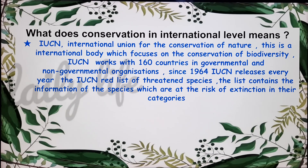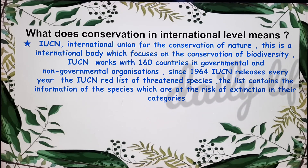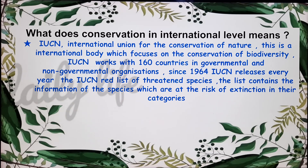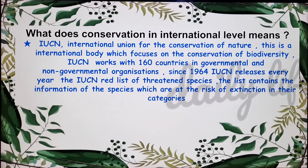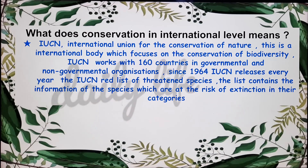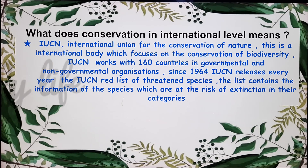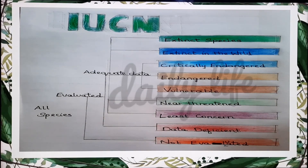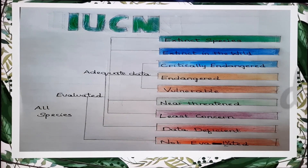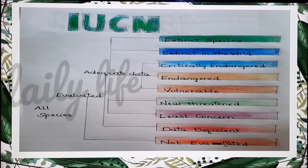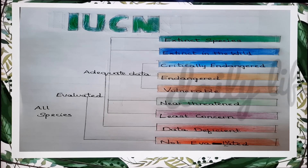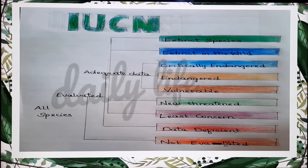Since 1964, IUCN releases every year the IUCN Red List, or the Red Data Book of Threatened Species. The list contains information of species which are at the risk of extinction in different categories. Now we are going to see the different categories of special status: extinct species, extinct in the wild, critically endangered, endangered, vulnerable, near threatened, least concerned, data deficient, and non-evaluated.